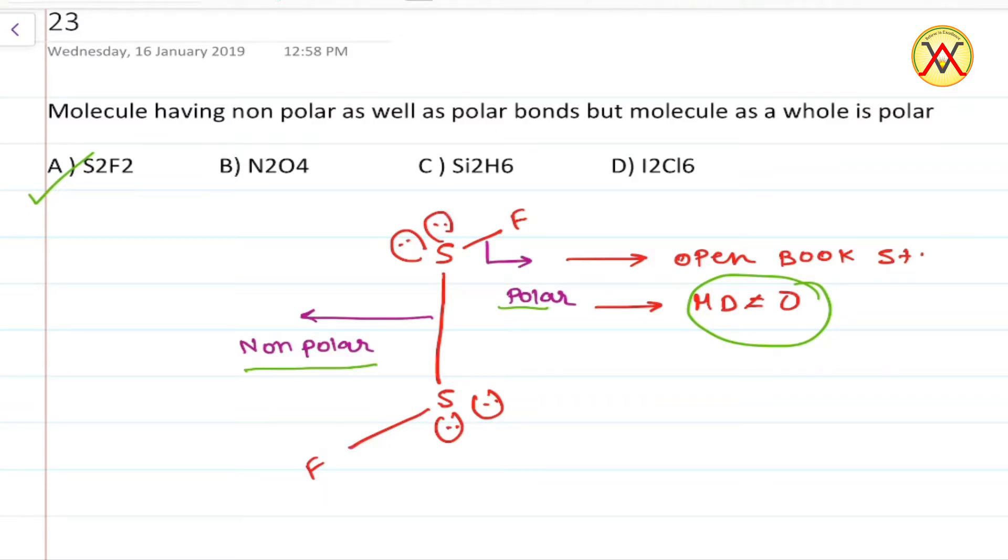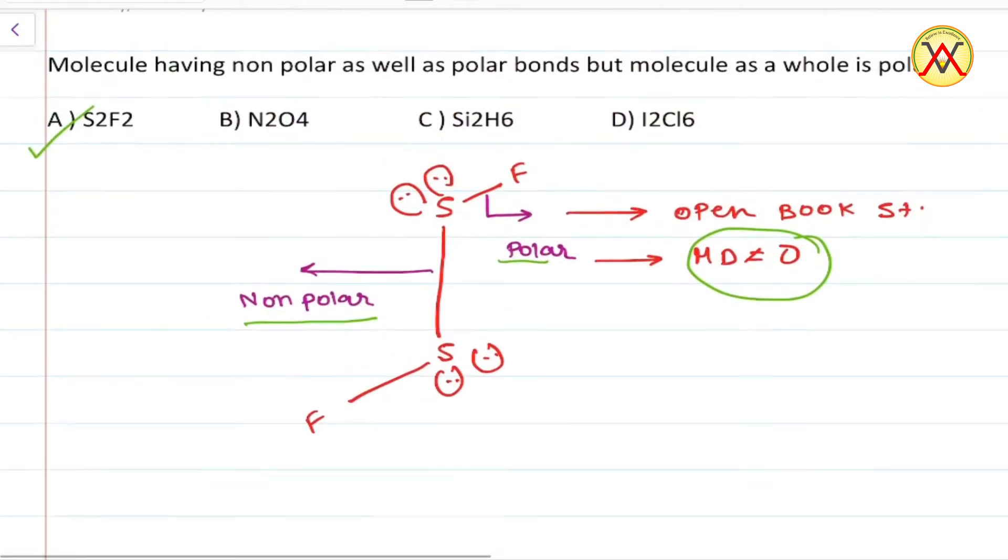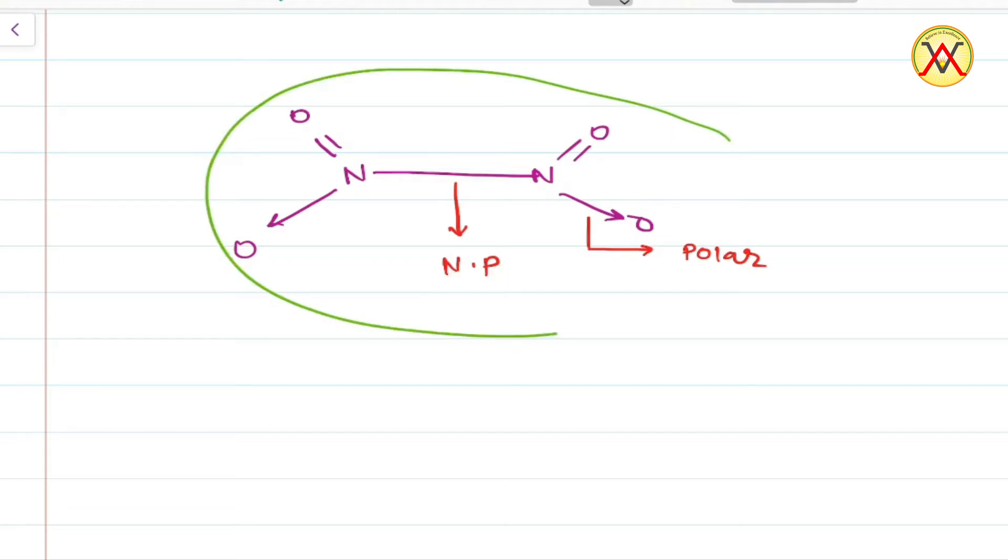In N2O4, the structure is like this which has non-polar bonds and polar bonds, but overall this molecule is non-polar.